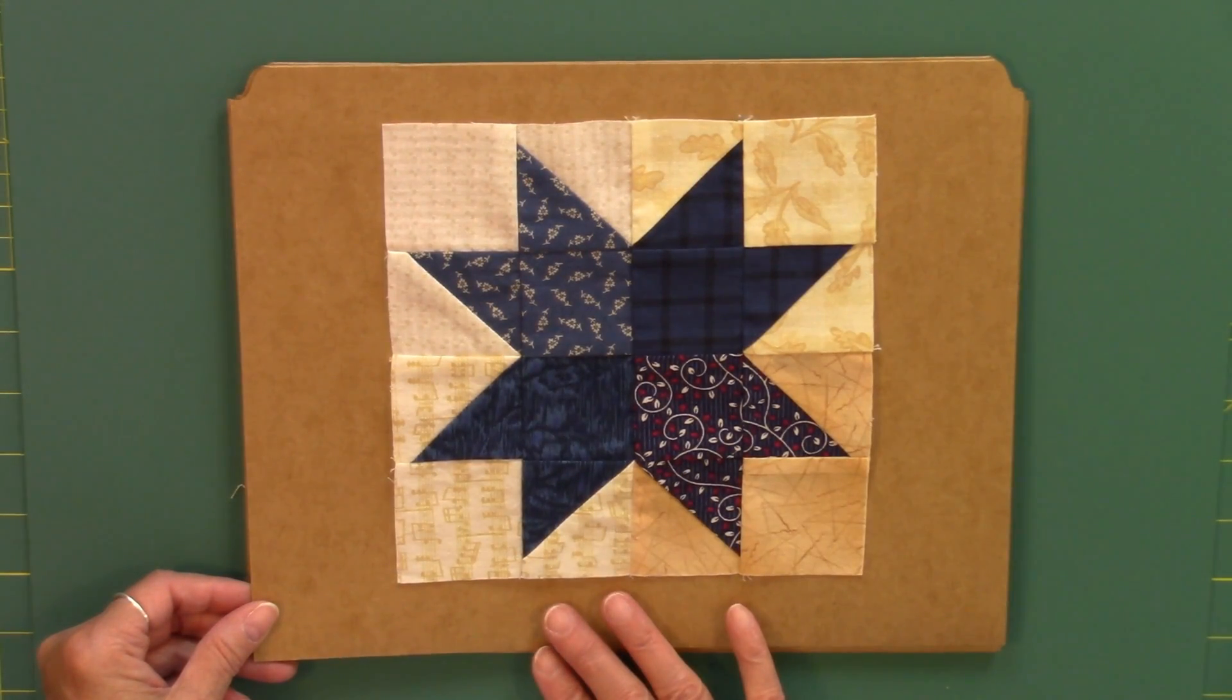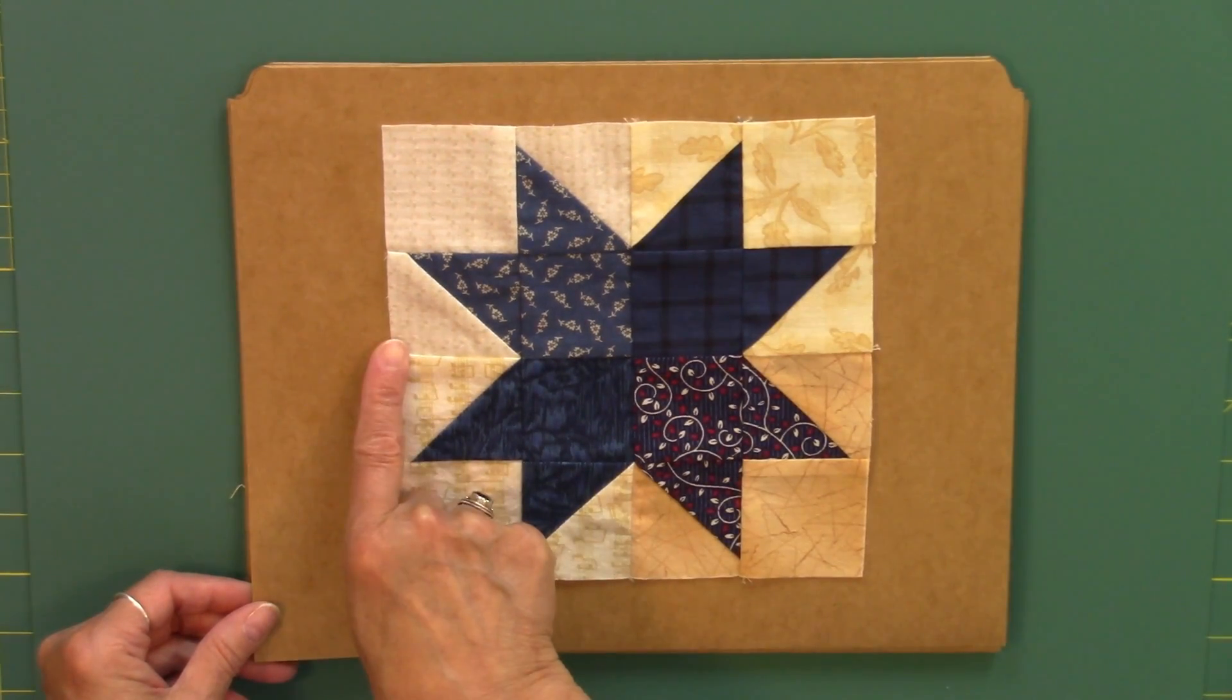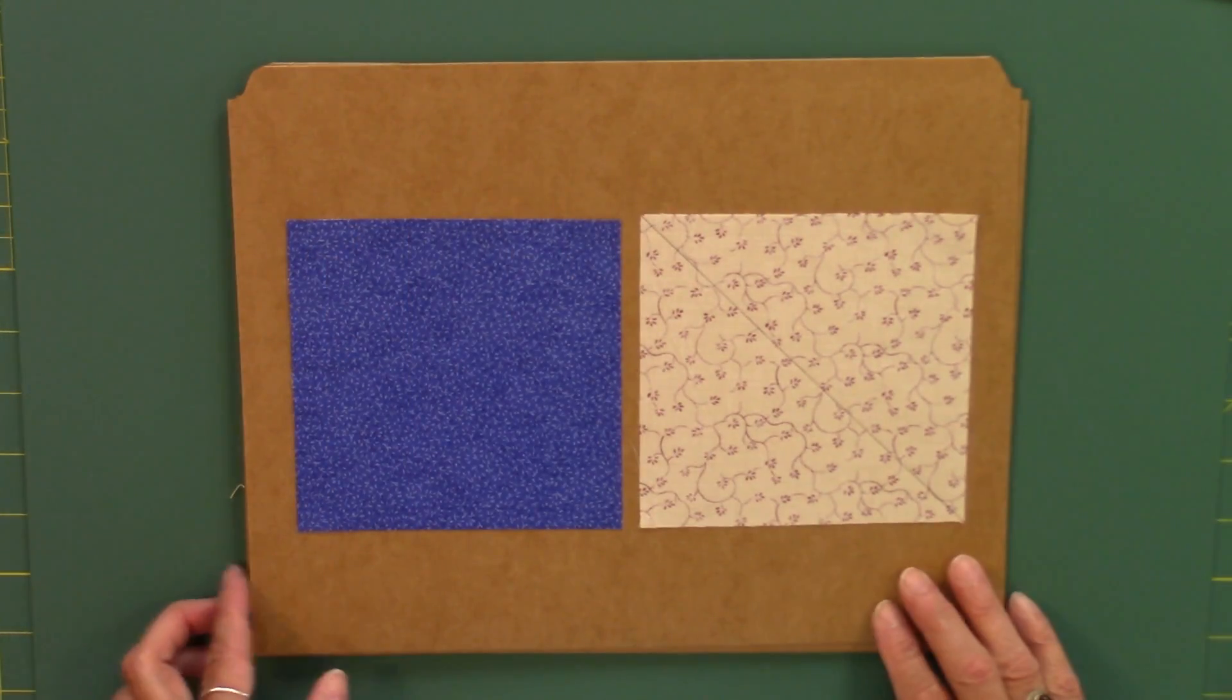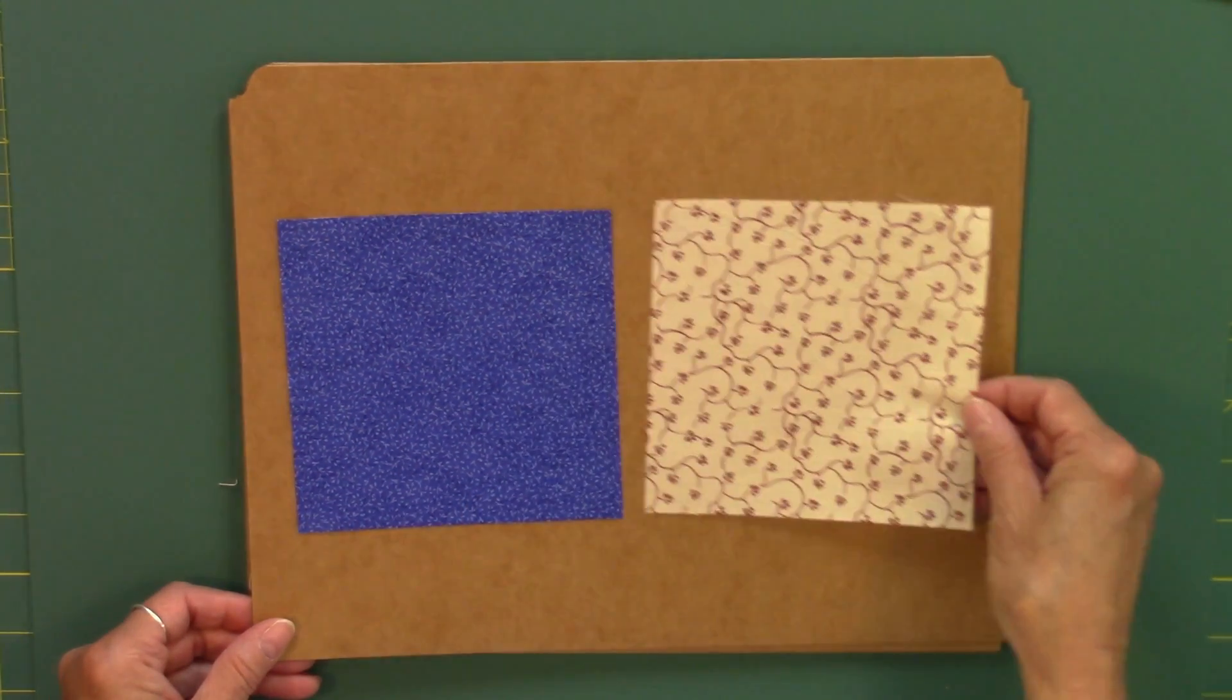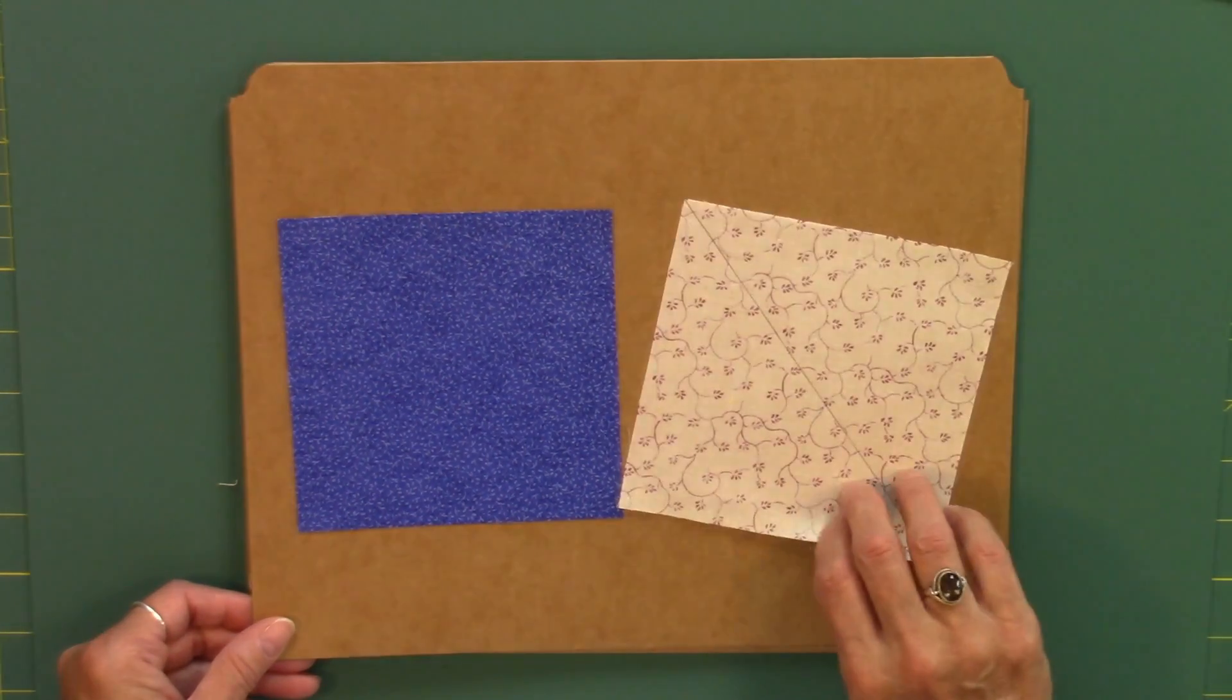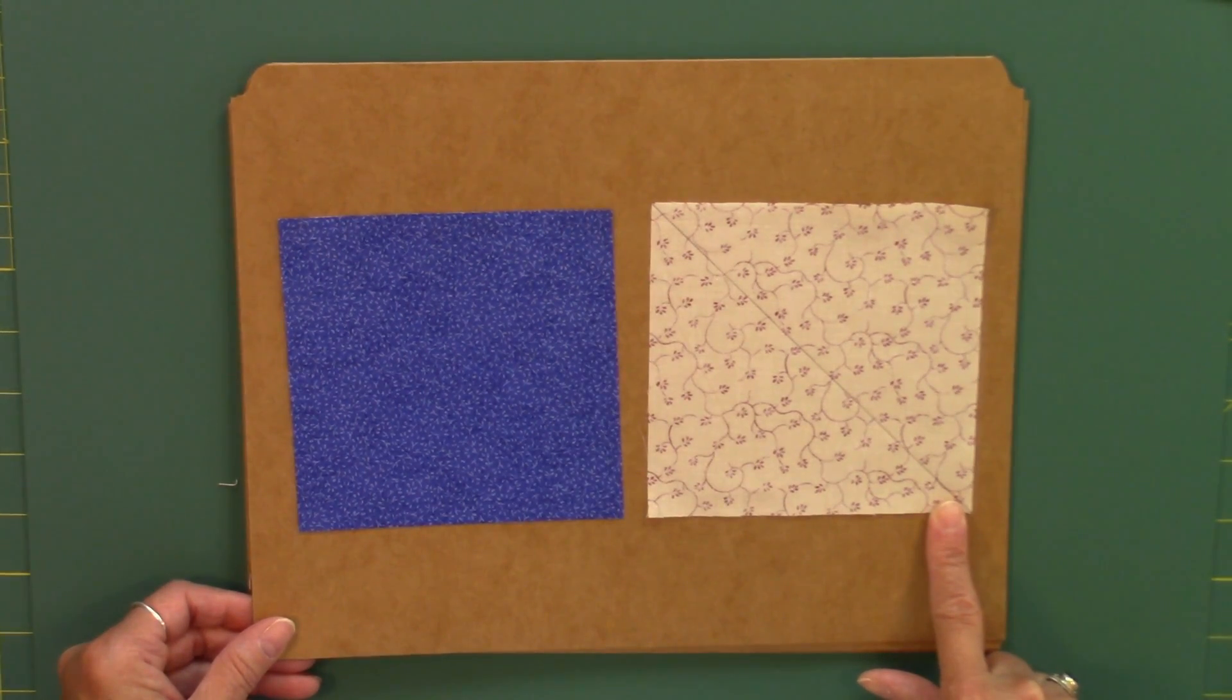Within each of the star blocks I'm working with four different blue fabrics and four different background fabrics. To start with, five inch squares of the main fabric, the blue fabric, and a five inch square of the background fabric. On the background fabric I have drawn, and this is on the back side of it, a diagonal line from point to point.